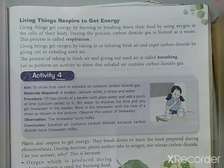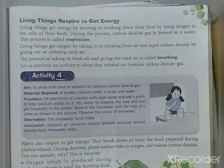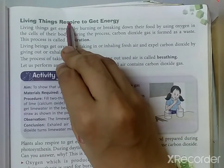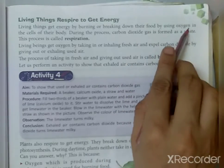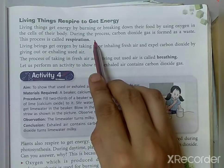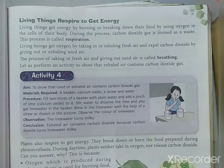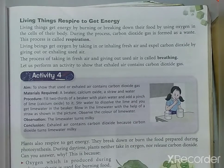Next, living things respire to get energy. Every living thing needs food and energy. The food gets converted into energy by the process of respiration — when the food burns using oxygen, the living organism gets energy. That process is called respiration.